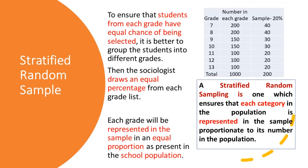There is a method which will allow us to ensure that each category within a group is entitled to a number equal to its proportion in that group. We call it stratified random sampling.